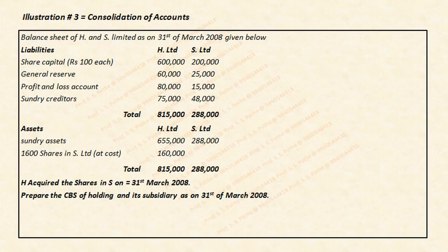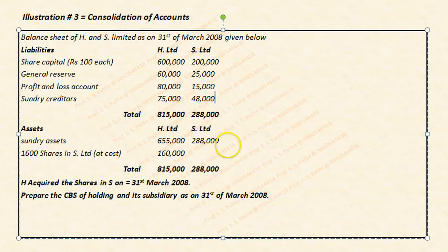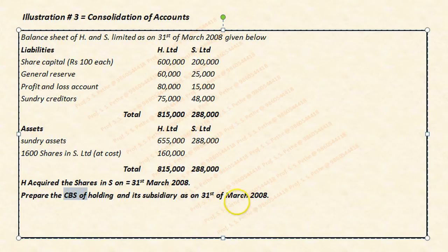Let's see illustration number three. In this question, the balance sheets of holding and subsidiary are given as of 31st March 2008. Shares were acquired on 31st March 2008 — the same date as the balance sheet. We are required to prepare the consolidated balance sheet on the same date. Let's see how to solve this question.